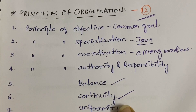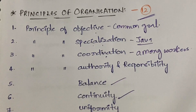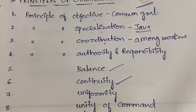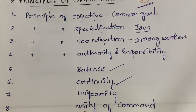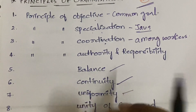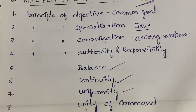Next is the principle of uniformity. It is similar to balance, but in uniformity, work should be distributed to each and every person equally. It's not like one person is given the entire work while others sit idle. Work should be distributed uniformly to all people in the organization.